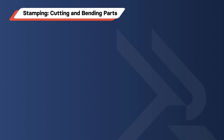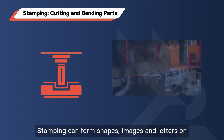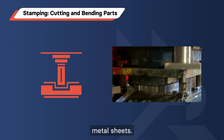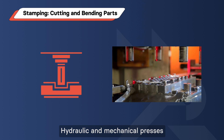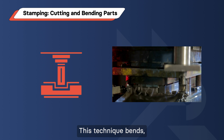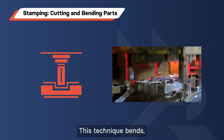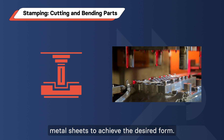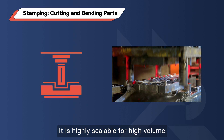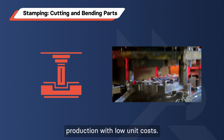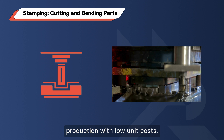Stamping – Cutting and Bending Parts. Stamping can form shapes, images, and letters on metal sheets. Hydraulic and mechanical presses are used for stamping. This technique bends, punches, and cuts metal sheets to achieve the desired form. It is highly scalable for high-volume production with low unit costs.